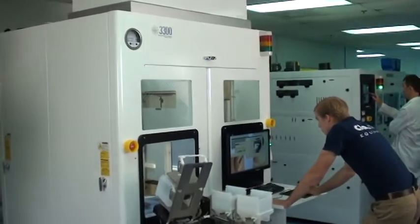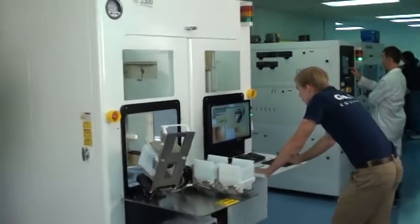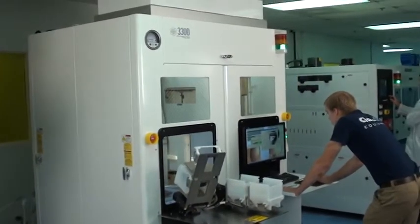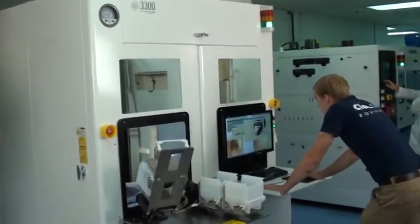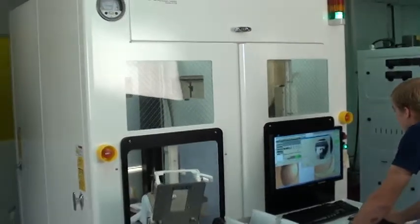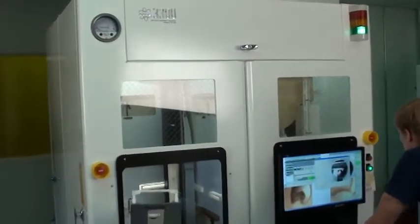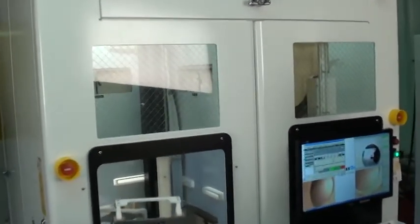We're here at Class 1 Equipment in our wet process lab. We're looking at an SSEC 3300 wet etch system. We're going to cover general configuration and cycle some wafers through the chambers.